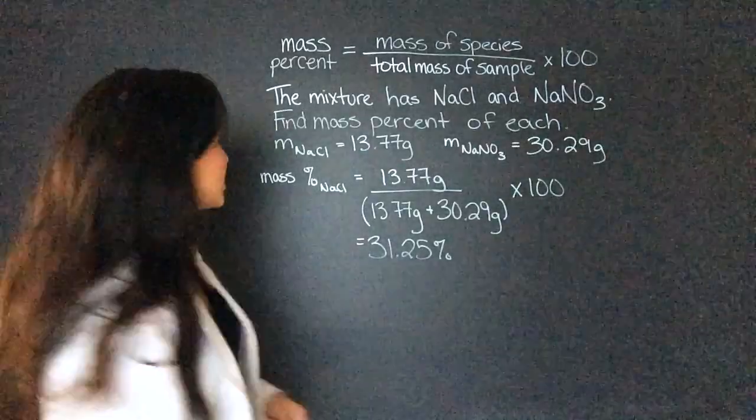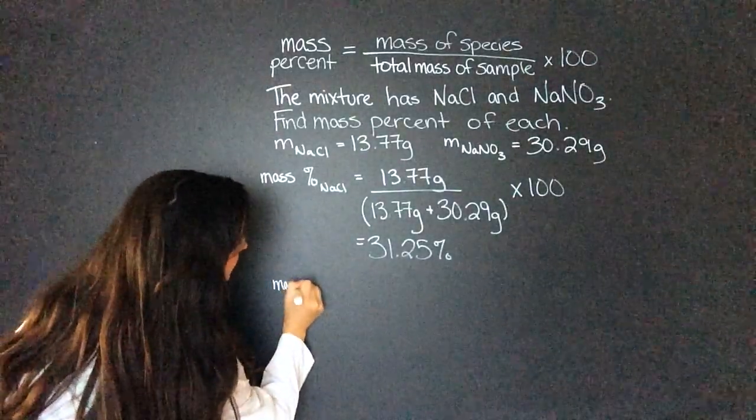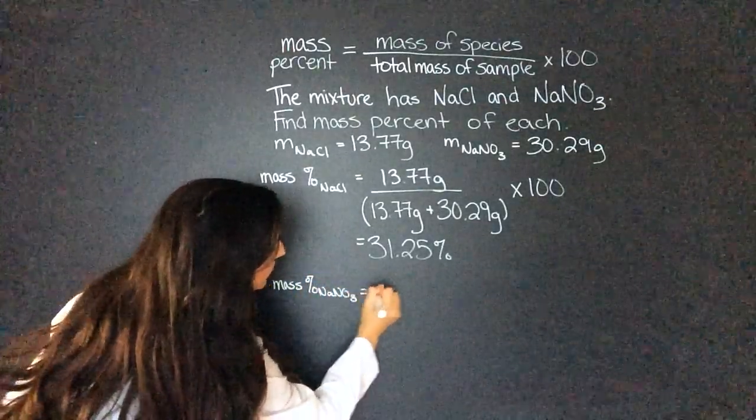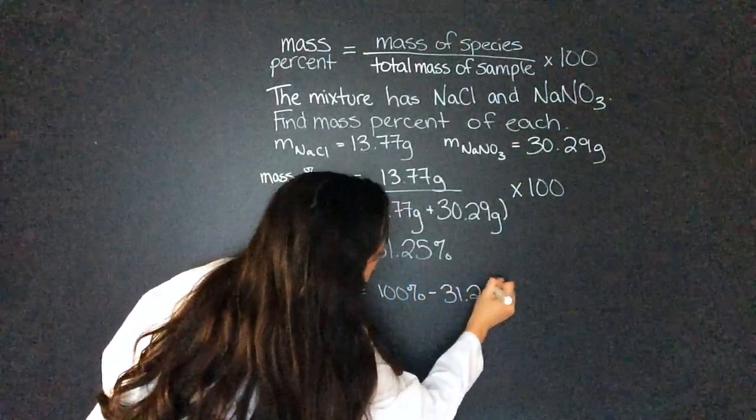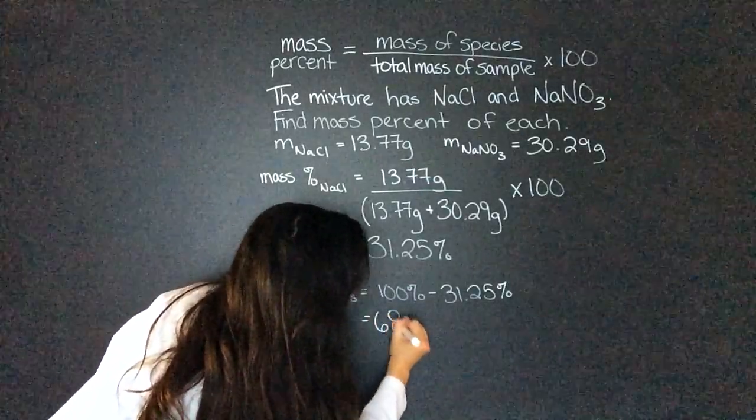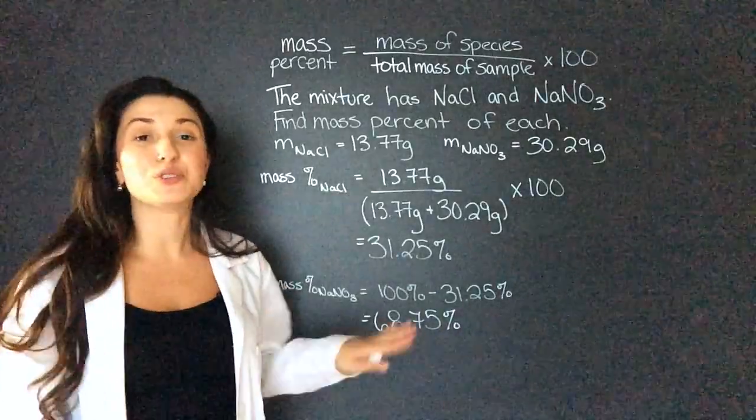sodium nitrate. So let's try that. The mass percent of sodium nitrate is 100 percent minus 31.25 percent. That will give me 68.75 percent.